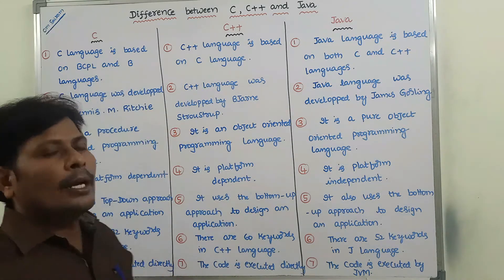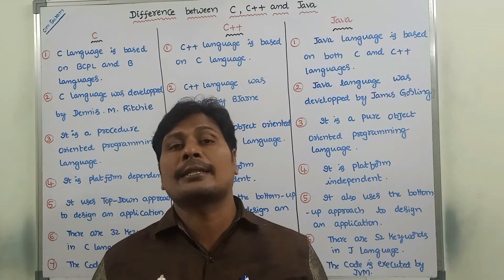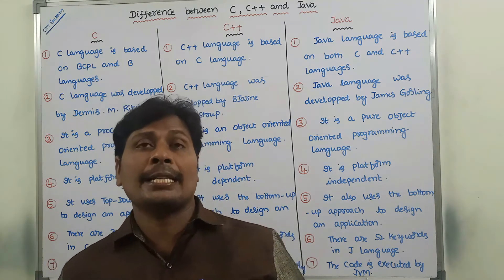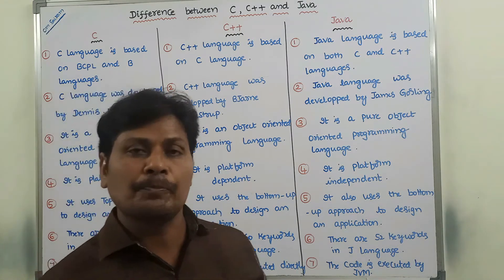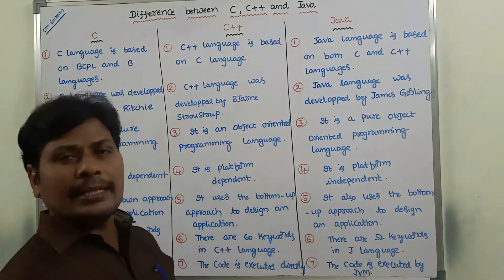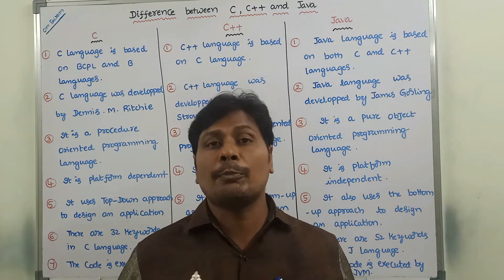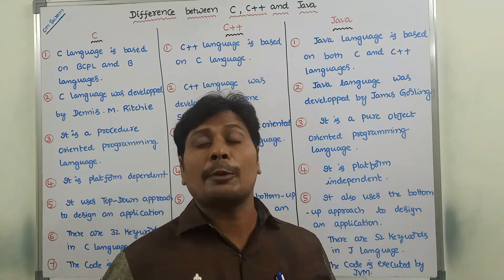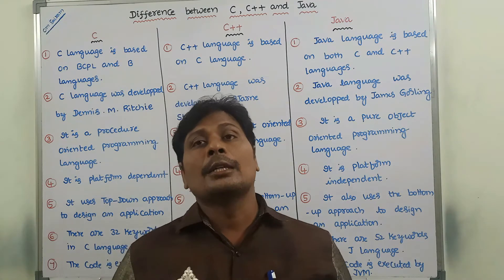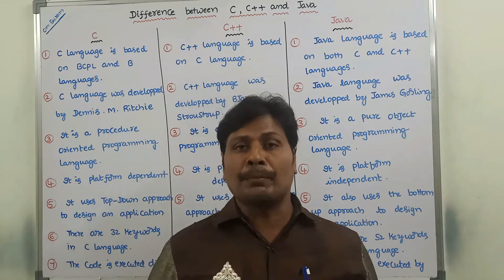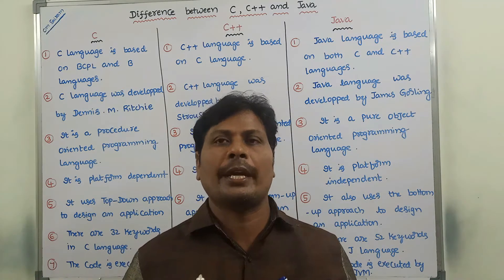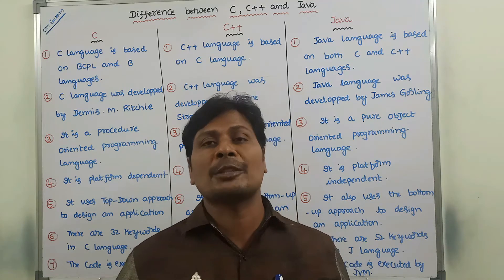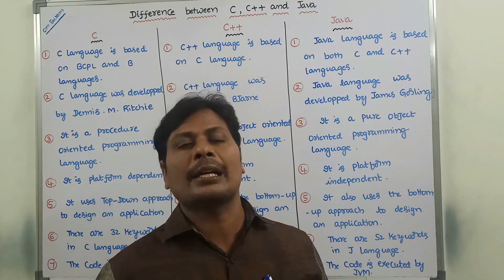C language uses 32 keywords, whereas in C++ there are 60 keywords, and in Java there are 52 keywords. In C language the code is executed by the Turbo C compiler, whereas in C++ we use the Turbo C++ compiler. In Java, to execute the code we use the JVM (Java Virtual Machine). In C and C++, the code is executed directly by the corresponding compiler.